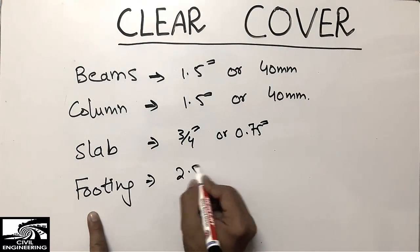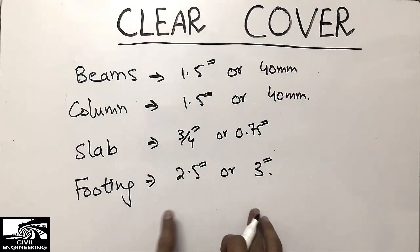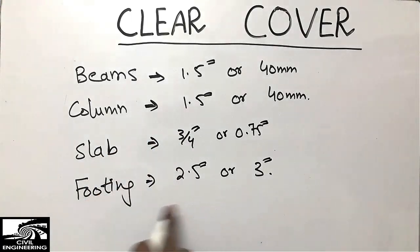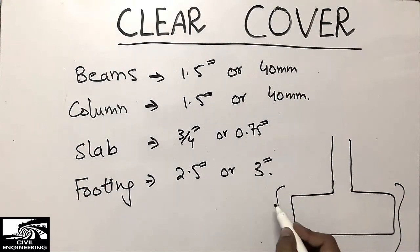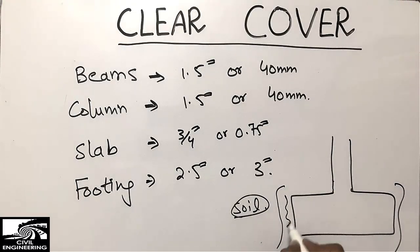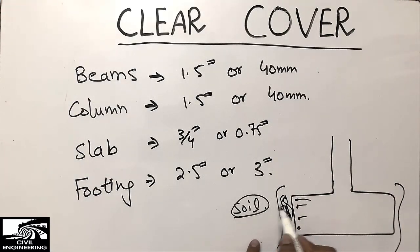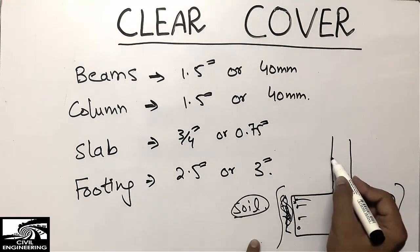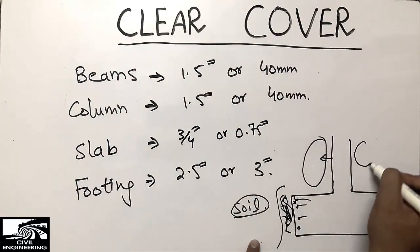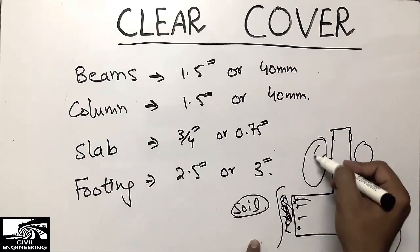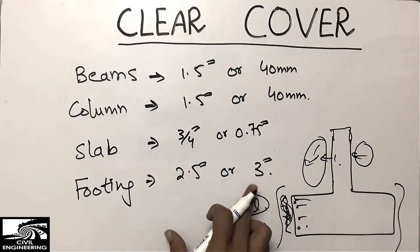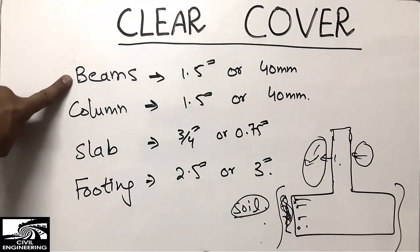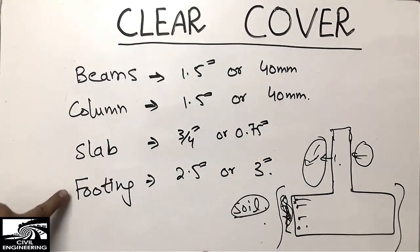In the case of footings, we always provide 2.5 inches or a minimum of 3 inches. The footing clear cover is more than for beams, columns, or slabs because the footing is in contact with soil. The soil causes corrosion of the steel bars, so we provide more cover. For beams and columns there is no such soil condition, so the minimum is 1.5 inches; for slabs 0.75 inches; and for footings 3 inches or 2.5 inches minimum.